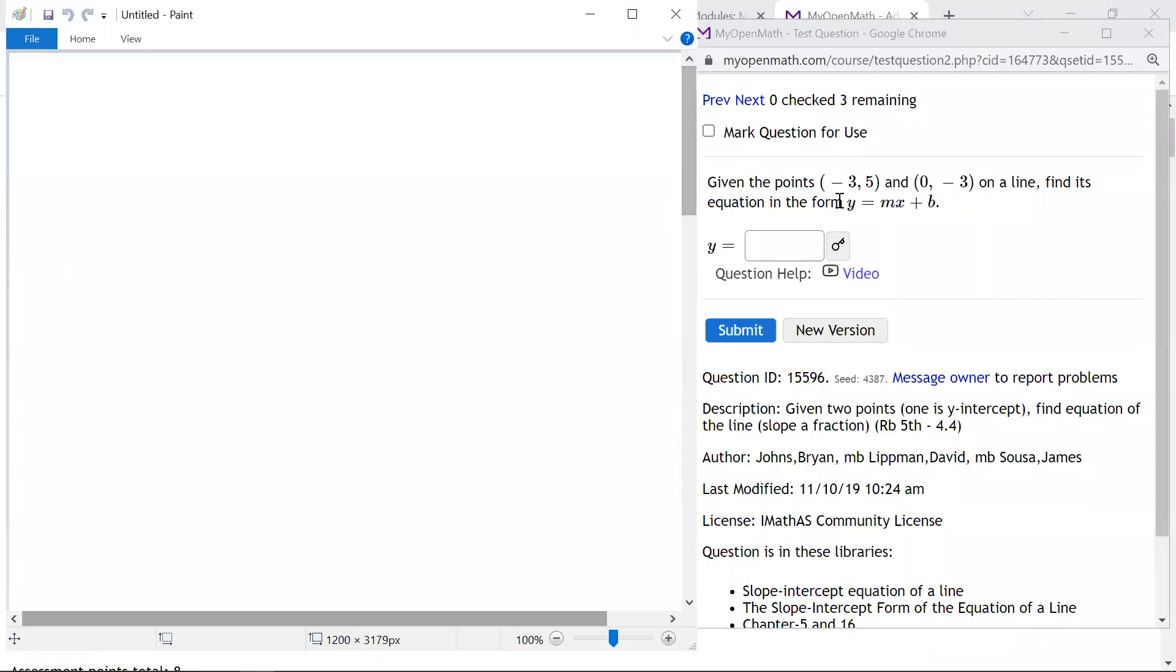Okay, so for this question, I'm seeing two points. I also noticed that the last point is the y-intercept, which is negative 3. So that's nice. And the reason I knew that is because x was 0, so that's on the y-axis.